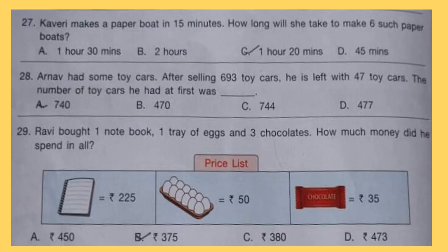Question 27: Kaveri makes a paper boat in 15 minutes. How long will she take to make 6 such paper boats?